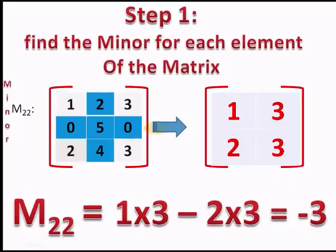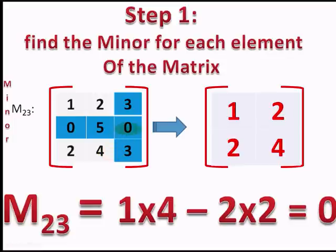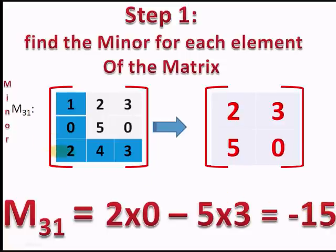For element A22, which is 5, the minor is M22. Leaving the second row and second column, the remaining elements are 1, 3, 2, and 3. Multiplying: 1×3 minus 2×3 gives minus 3. So M22 is minus 3. For element A23, which is 0, M23 is equal to 0.